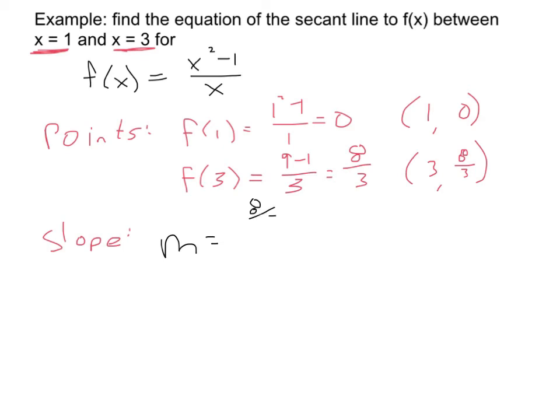m equals 8 thirds minus 0 over 3 minus 1. That's 8 thirds over 2. So then to simplify, on the bottom this becomes 1, and on the top the 2 and 8 divide to give me 4. So it looks like my slope is 4 thirds.